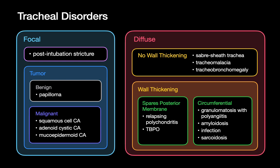For diffuse tracheal disorders associated with wall thickening, there are two groups: those that spare the posterior membrane and those that involve all 360 degrees of the tracheal wall circumferentially. Disorders that spare the posterior membrane include relapsing polychondritis — fairly common — and tracheobronchopathia osteochondroplastica (TBPO), a very rare disease that frequently appears in board or quiz settings. Disorders with circumferential 360-degree wall thickening include GPA (formerly Wegener's), amyloid, infection, and sarcoidosis.